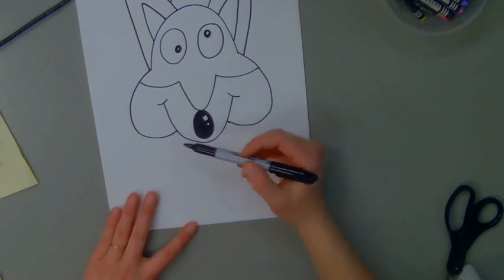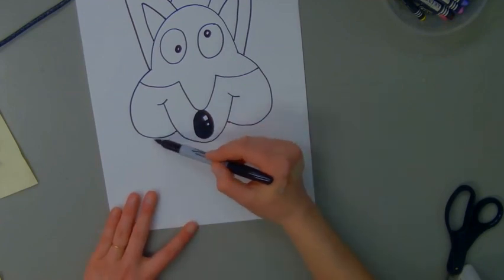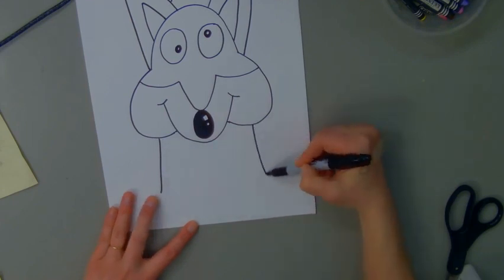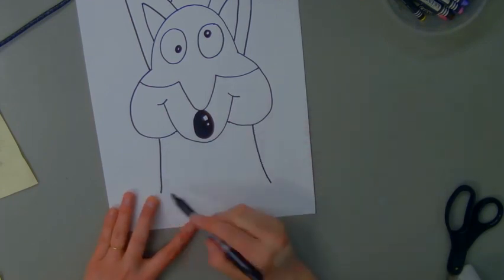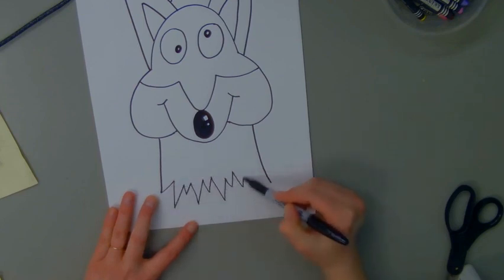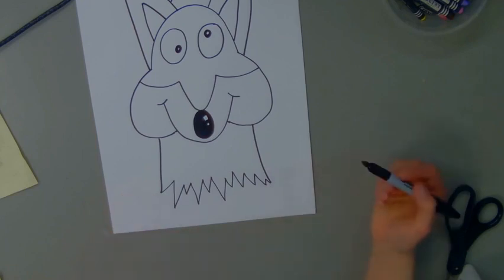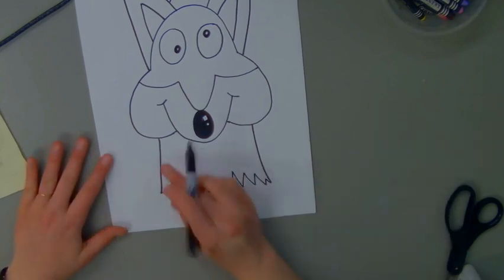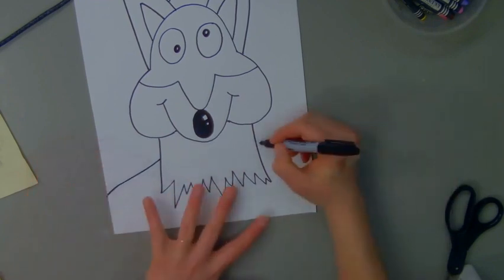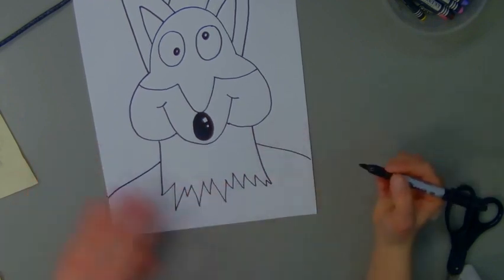I'm going to start by drawing his neck down here. I'm going to start kind of on the bottom of his cheek here with a diagonal line. Same line on the other side. Across the bottom, I'll draw a zigzag line. This is where his fur kind of peeks up over his jersey. Then I'll draw his shoulders about halfway down the neck, just kind of curving and going off the page.